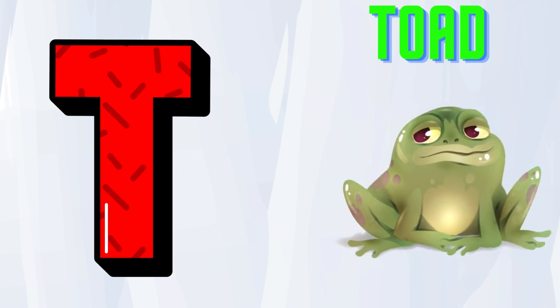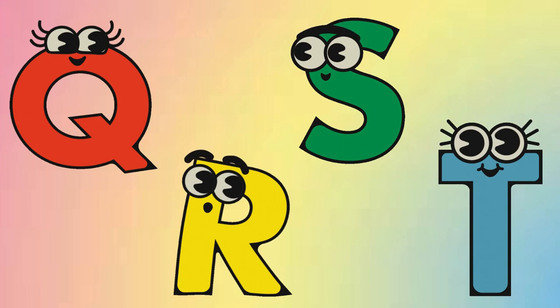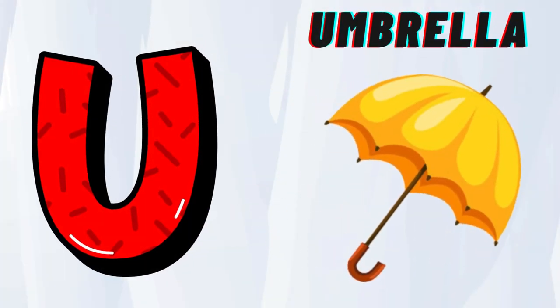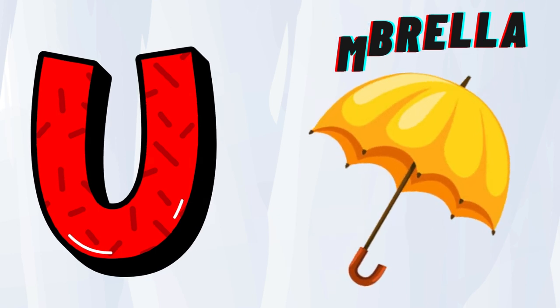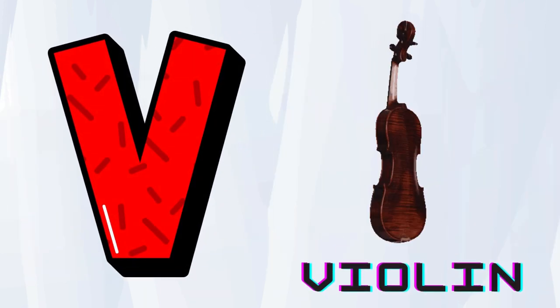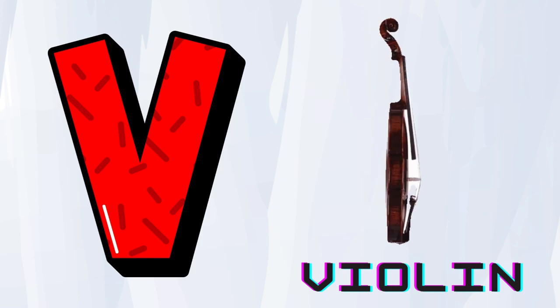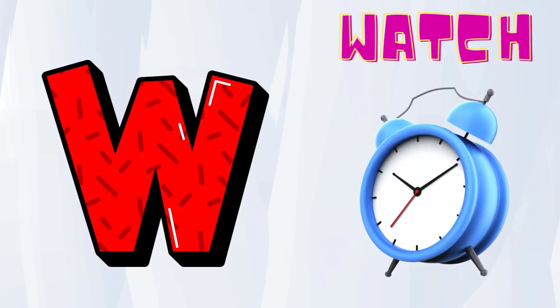T is for toad, t-t-toad. U is for umbrella, u-u-umbrella. V is for violin, v-v-violin.